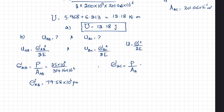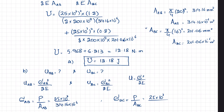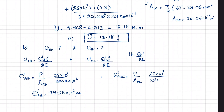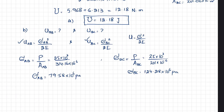The stress in rod BC equals load over area of BC: 25 × 10³ divided by area of BC = 201.06 × 10⁻⁶, which gives stress in BC = 124.28 × 10⁶ Pa. Now we have both values and can put them into the strain energy density formula.